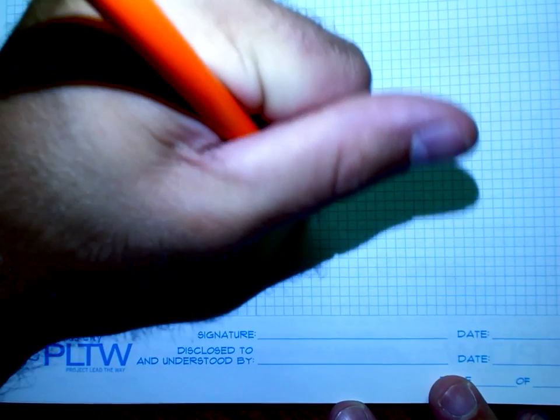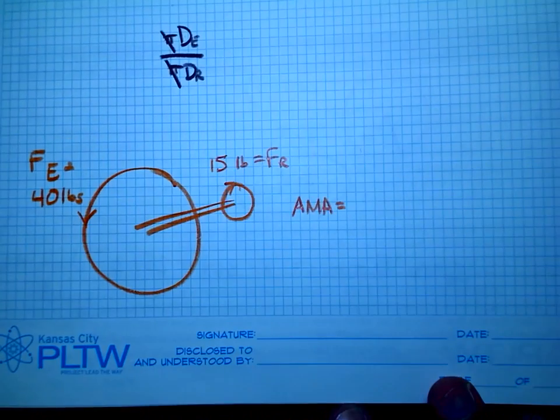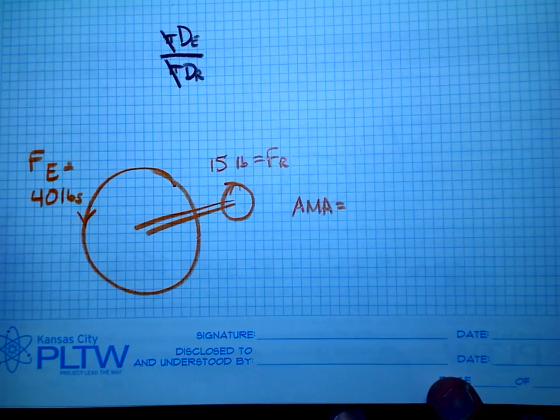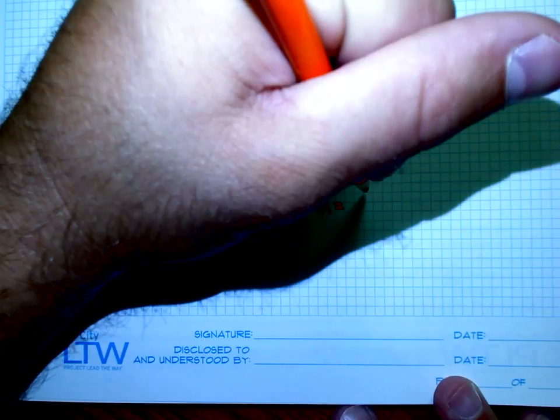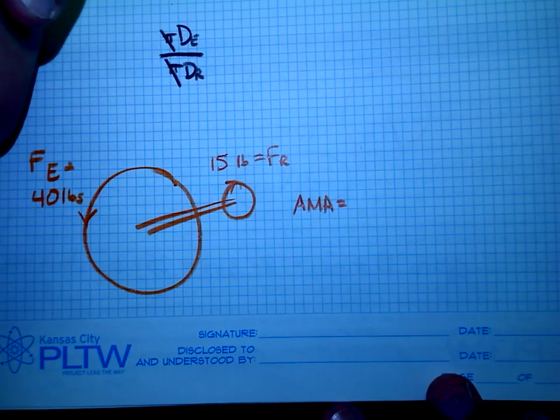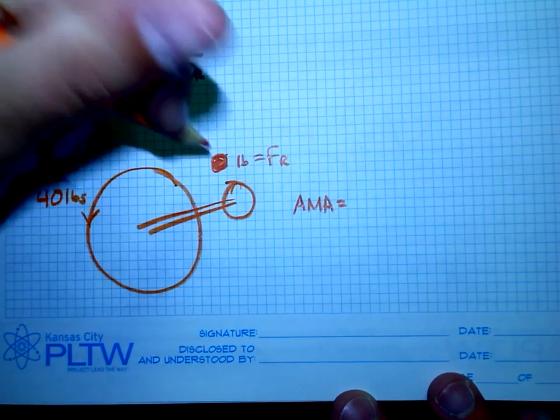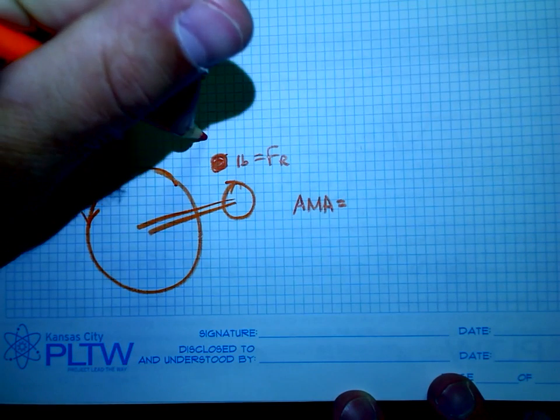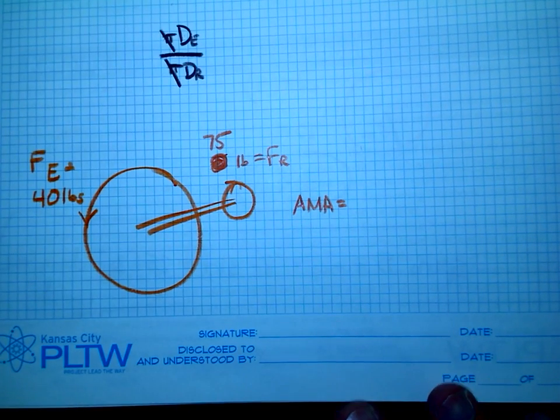When I talk about AMA, the actual mechanical advantage that I got out of this system, what I'm going to do is I'm going to compare then the force that I got out. Oh, I made that. Hold on. Let's pick a better value here. Let's say 75 pounds of force.